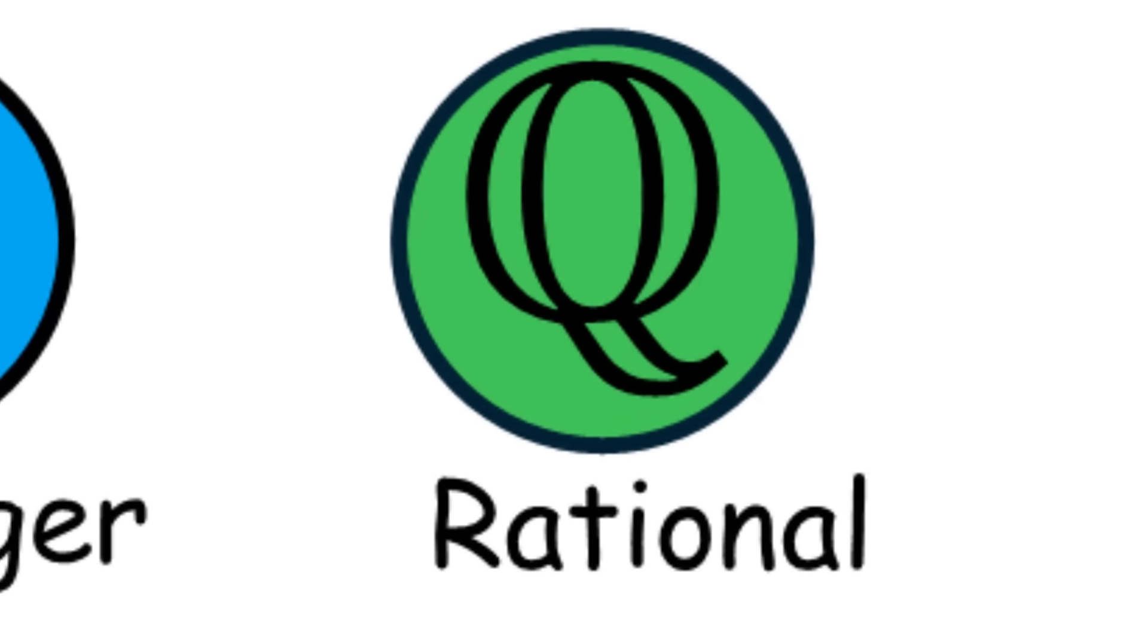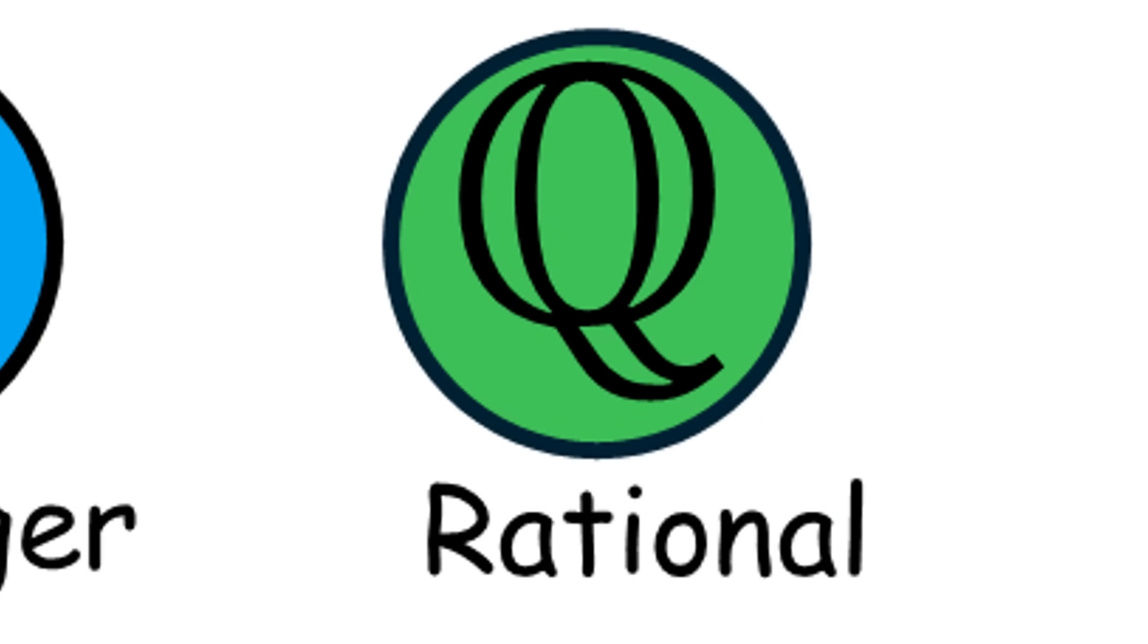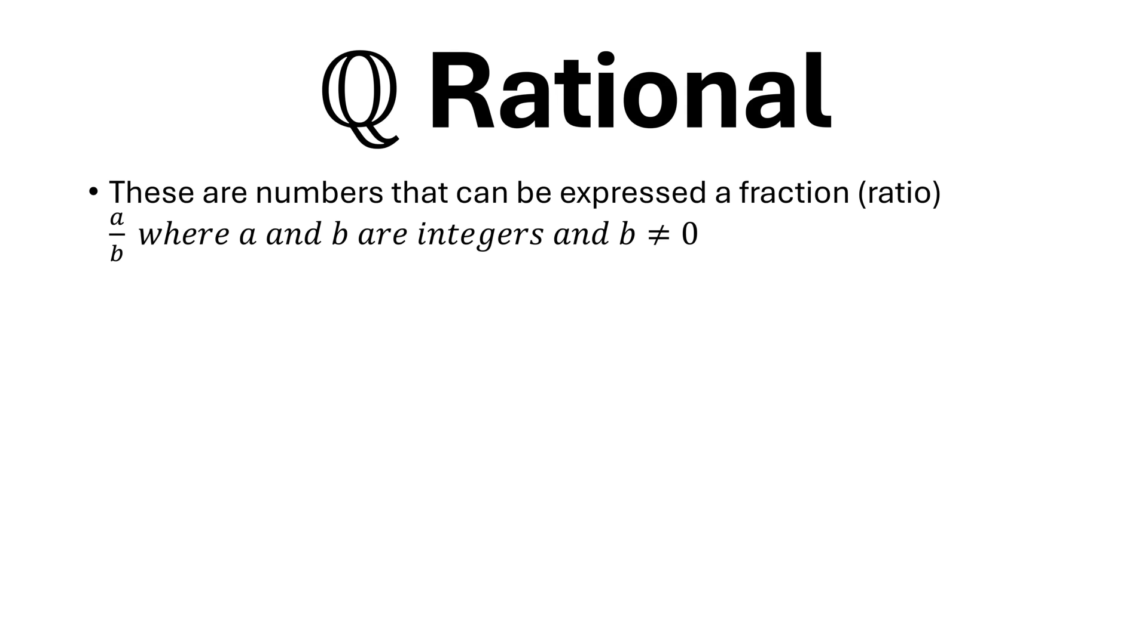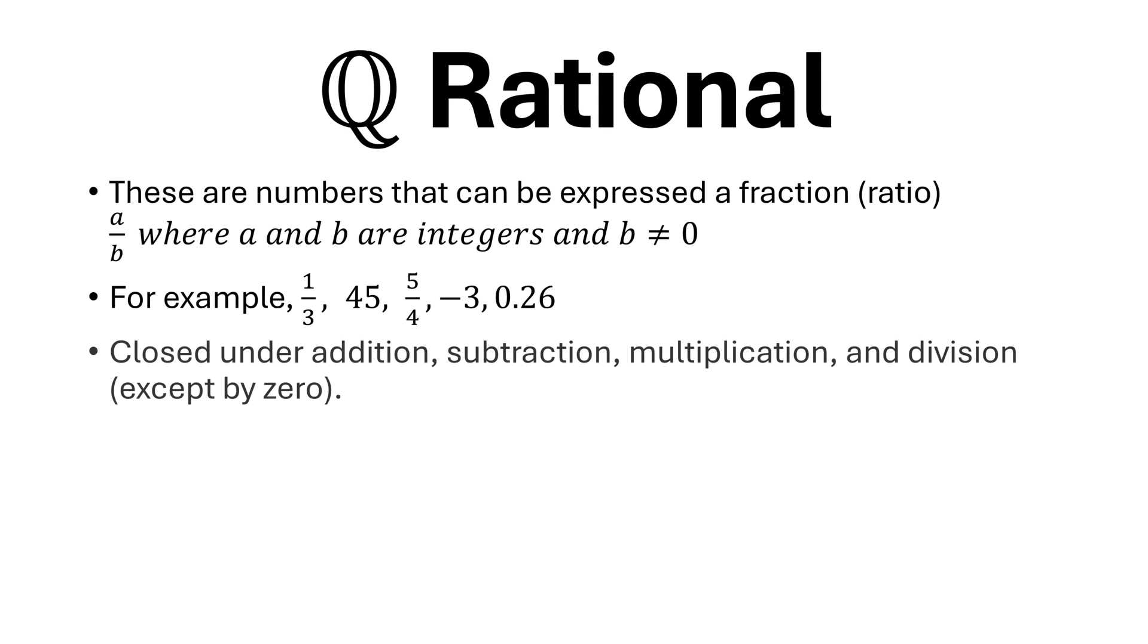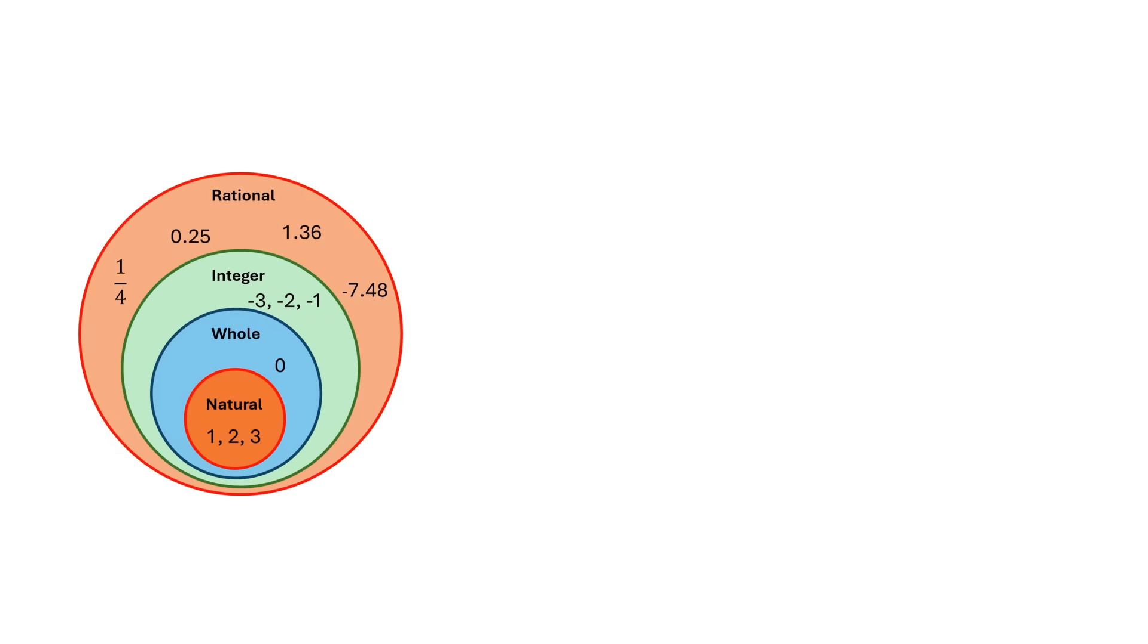These are numbers that can be expressed as a fraction, ratio, A over B, where A and B are integers and B is not equal to 0. For example, 1/3, 45, 5/4, -3, 0.26. They are closed under addition, subtraction, multiplication, and division, except by 0. Decimals either terminate or repeat.